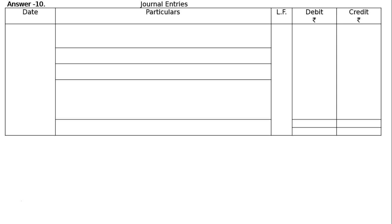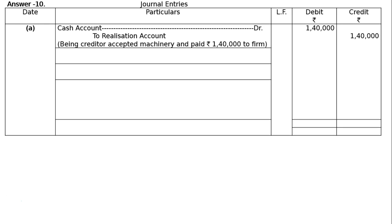Part A: A creditor of Rs.3,60,000 accepted machinery valued at Rs.5,00,000 and paid to the firm Rs.1,40,000. This means the machinery is effectively sold for a net value of Rs.1,40,000 to the firm. The journal entry is: Cash Account debited to Realisation Account Rs.1,40,000 — being creditor accepted machinery and paid Rs.1,40,000 to the firm.